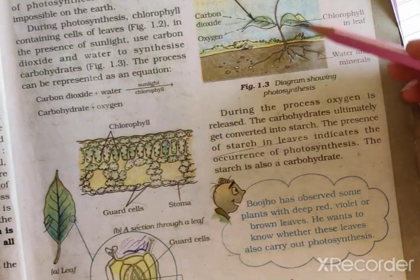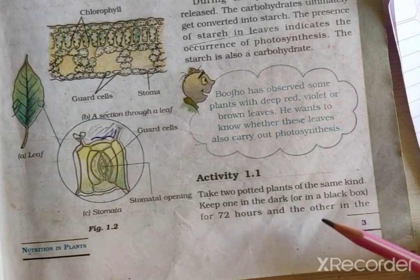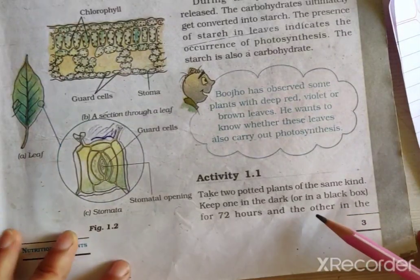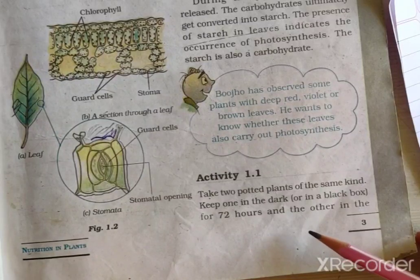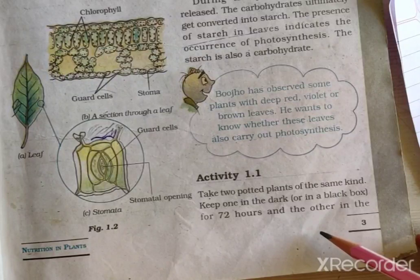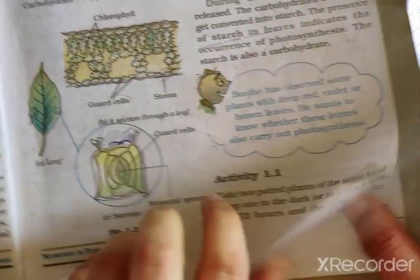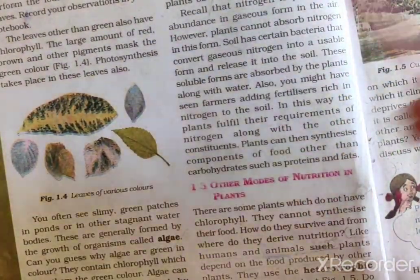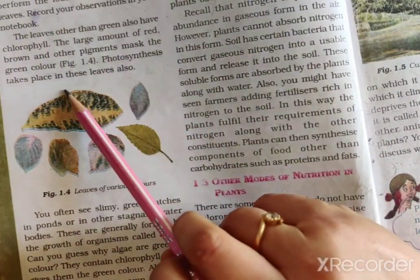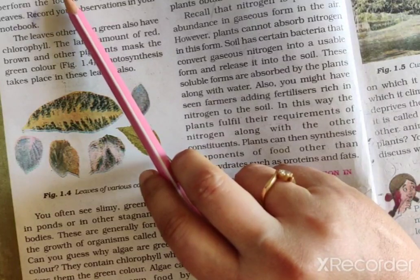Now we'll see Activity 1.1. Take two potted plants of the same kind and same height. Keep one in a dark room — or in a black-colored box — for 72 hours without sunlight, and keep the second plant in sunlight for 72 hours. After that, perform the iodine test using leaves from both plants.